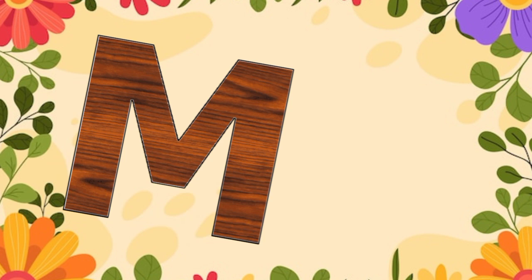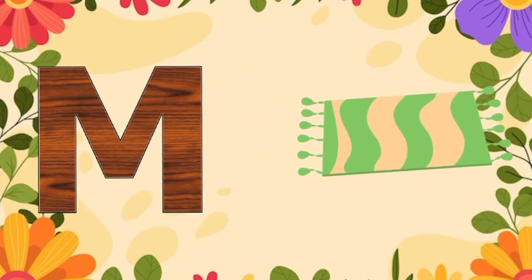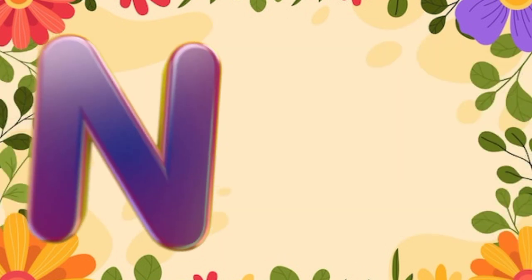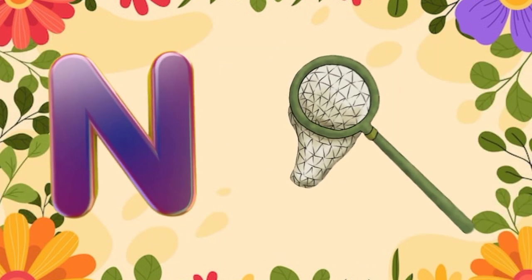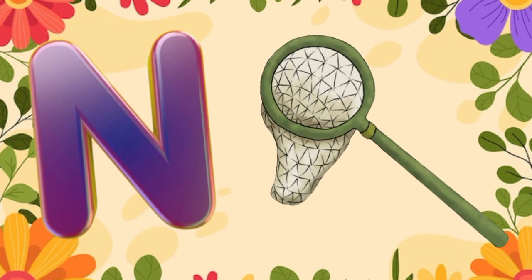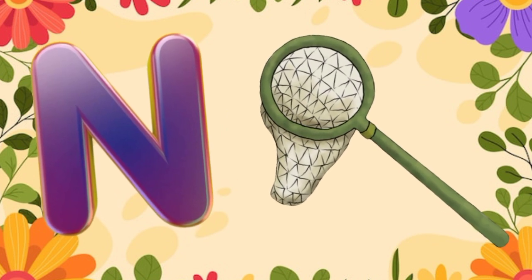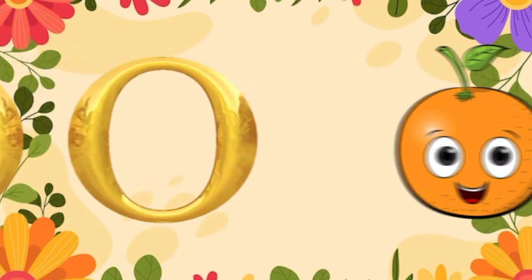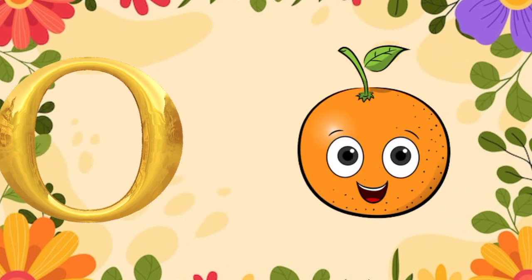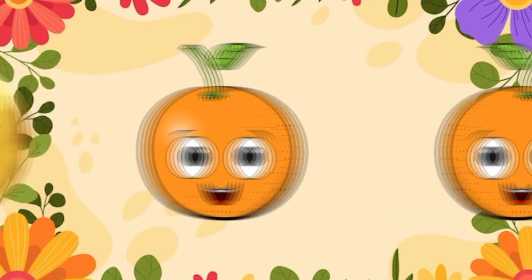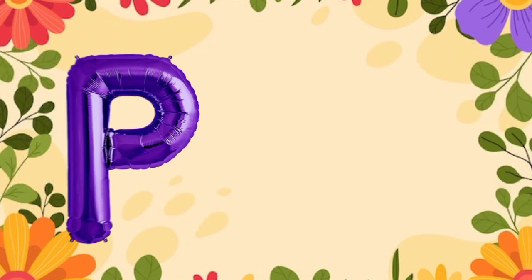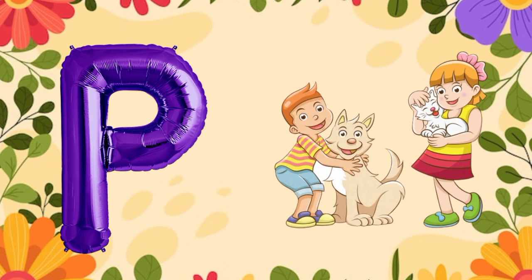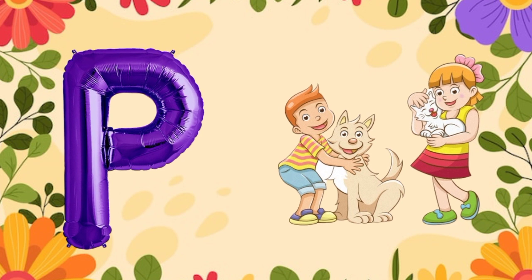M is for mat, m-m-mat. N is for net, n-n-net. O is for orange, o-o-orange. P is for pet, p-p-pet.